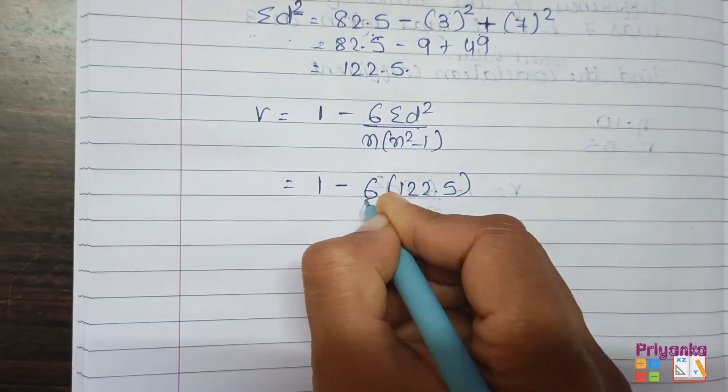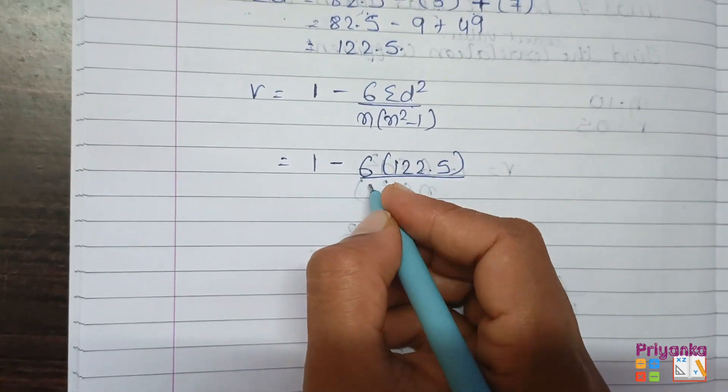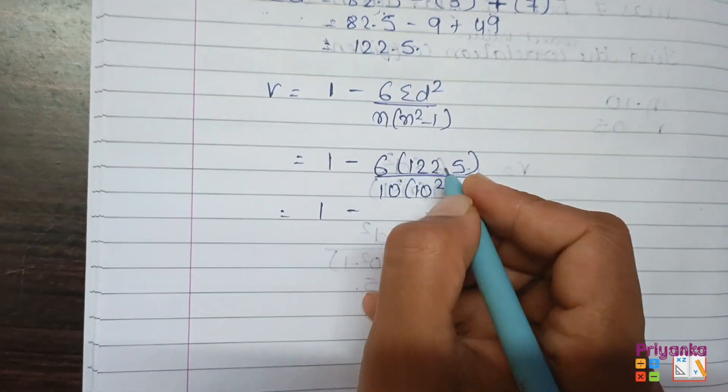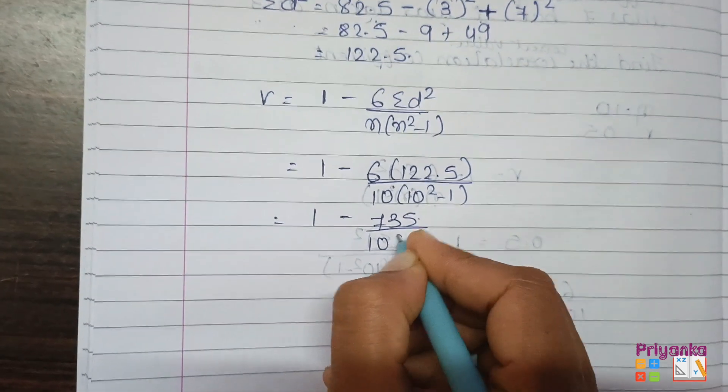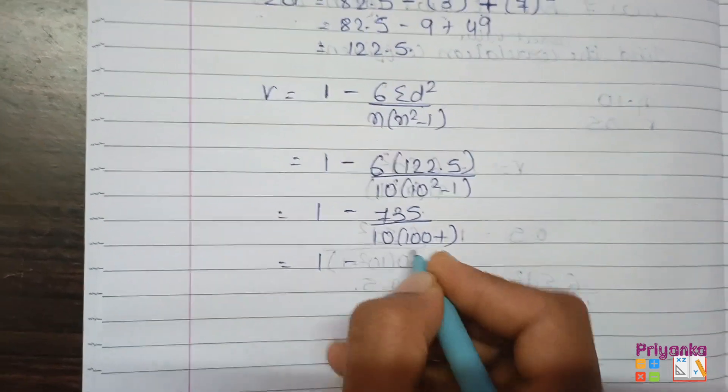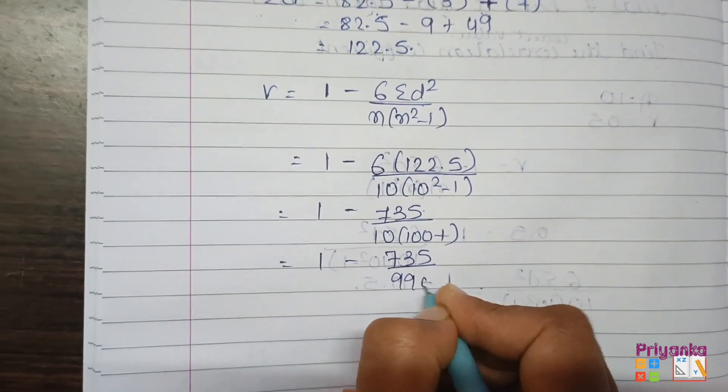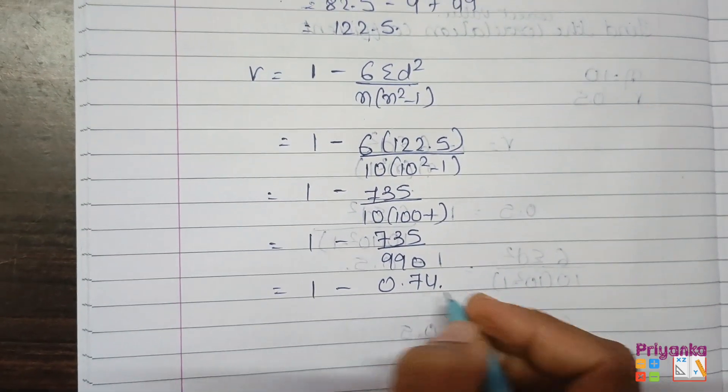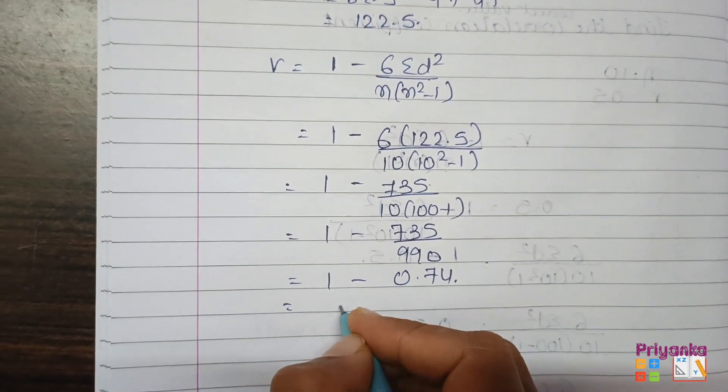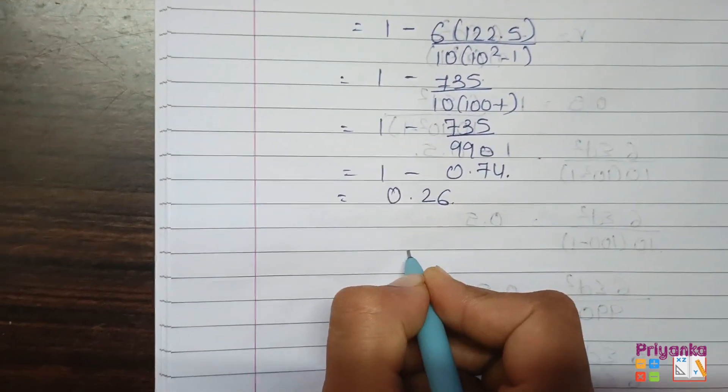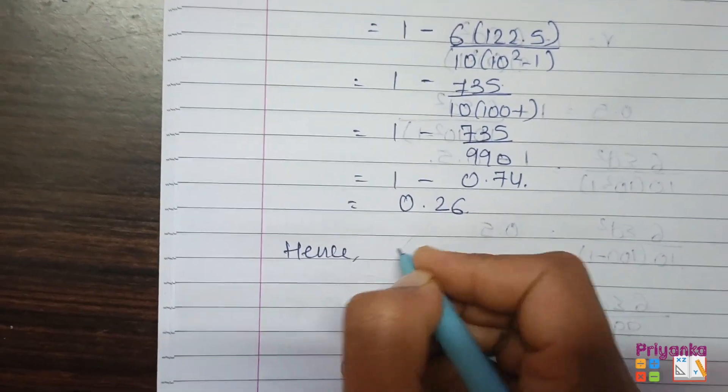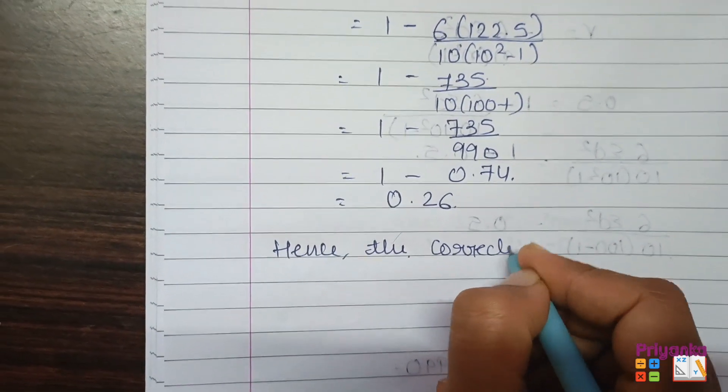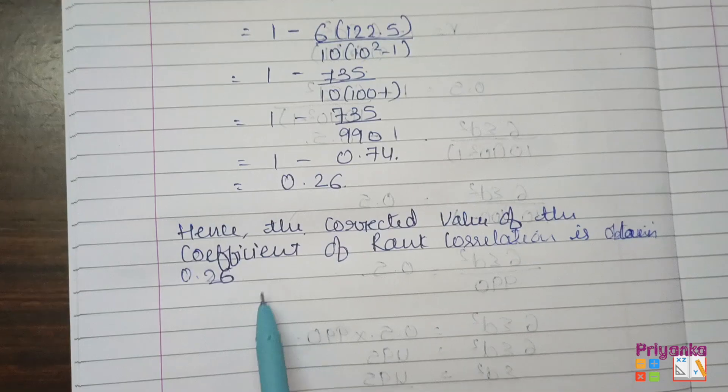So take 1 minus 6 sigma d square which we just now found, the corrected one, that is 122.5. n that will remain as 10, 10 square minus 1. 1 minus, get them multiplied, you will get 735. 10 that is 100 minus 1, 735, here we get 990. Remove the calculation of these two, you will get 0.74, and the answer is 0.26.